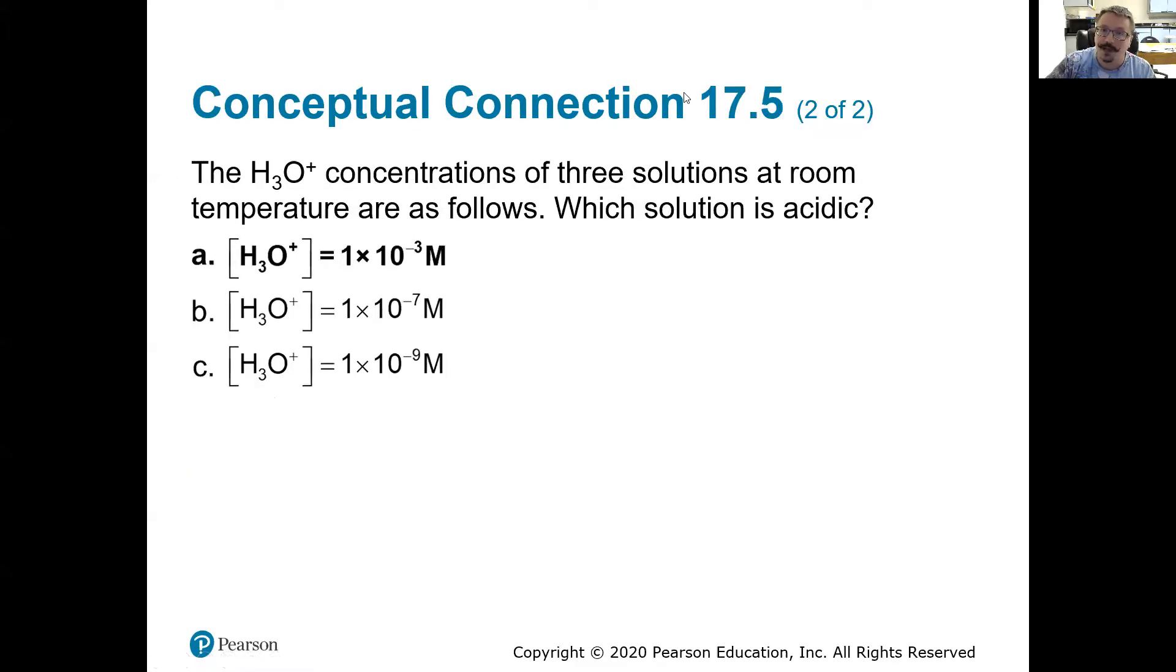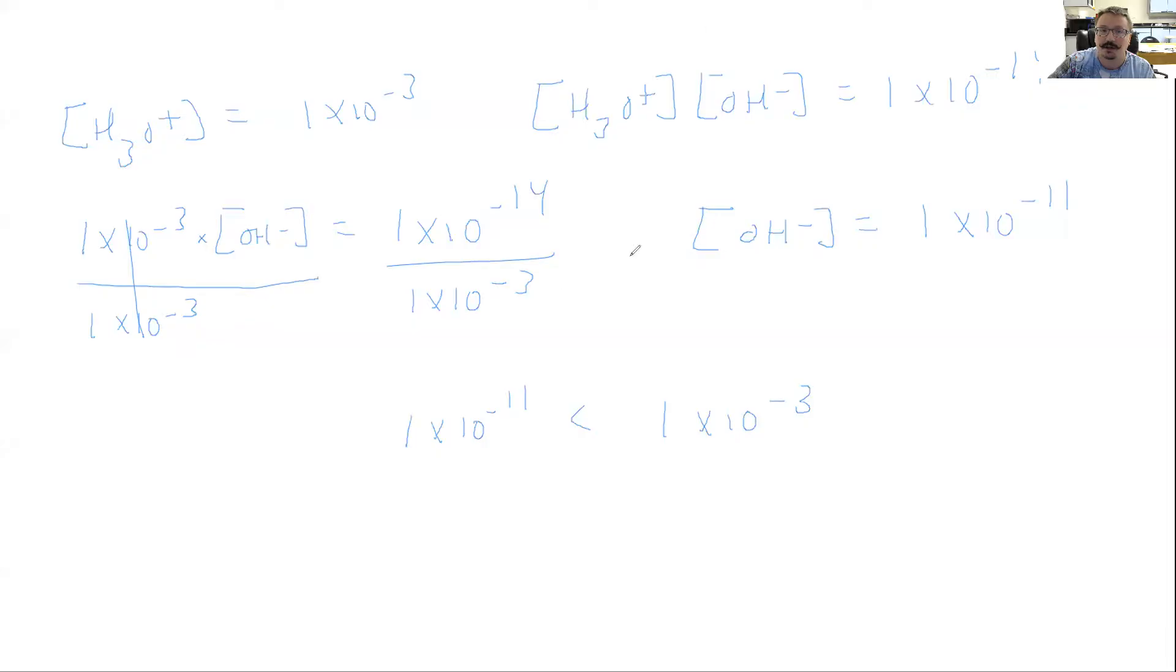So we'll stop there. Big takeaways. What's the auto ionization constant of water? 1 times 10 to the negative 14. And of course, know that that's equal to the hydronium ion concentration, the H3O plus, and the hydroxide ion concentration multiplied equals that. So we'll stop there. Short little video, but important concept. Very useful for figuring some things out. All right. Have a good day. Auf Wiedersehen.